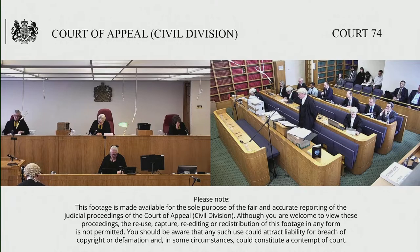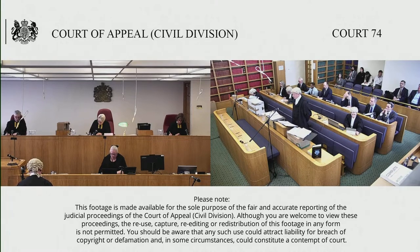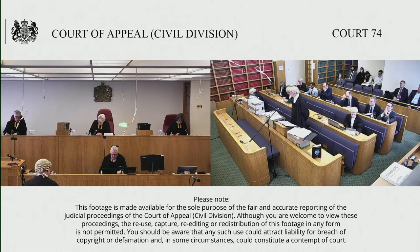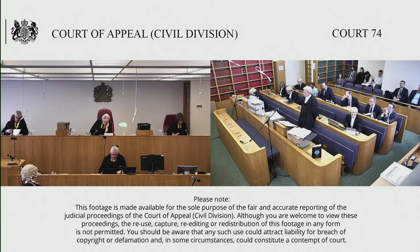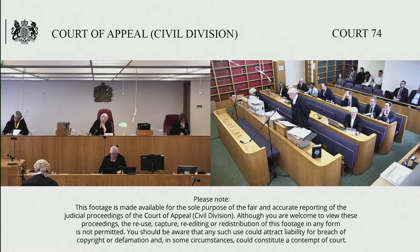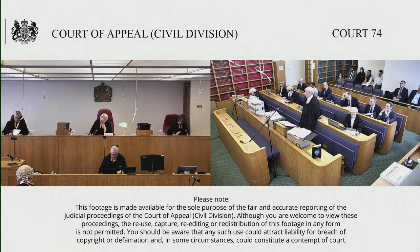6.3 makes clear that there can be income from immovable property by different forms of use of the immovable property: direct use, letting, or use in any other form. But it's from the use of the immovable property. That's clearly designed to deal with circumstances in which a person holds immovable property and derives income by turning it to account through the use by that person or the use by another.